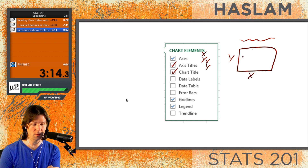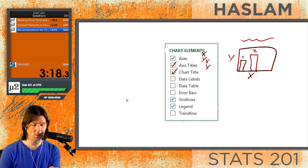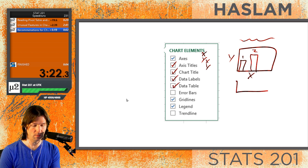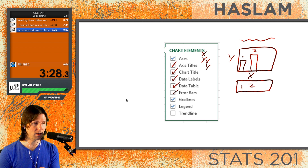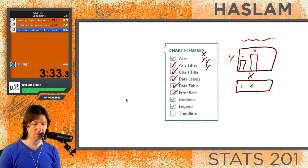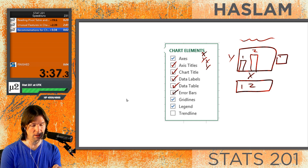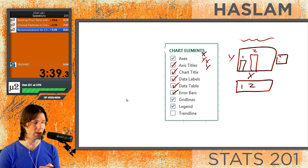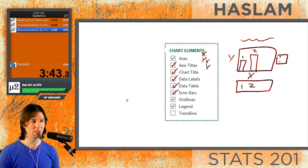You can put data labels, which will appear above your bars. You can also add a data table, which displays your numbers in a table below the chart. Error bars are generally used for quantitative data to give confidence intervals. You can add grid lines if you want them to appear on your graphic. There's the legend — which we saw on ours for male and female — and a trend line if you have quantitative data. With all of this, you'll have an excellent pivot chart that's easy to read.